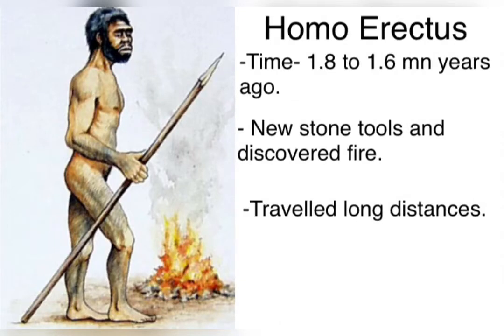Let's have a look at the fourth stage of evolution, that is Homo erectus. It was about 1.8 to 1.6 million years ago that our ancestors were Homo erectus. They are the ones who discovered fire and started using new stone tools. They were also the first to travel long distances and started migration from Africa to other continents.